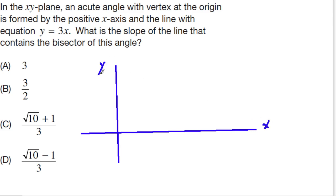And an acute angle with a vertex at the origin, so we're drawing a vertex at the origin, is formed by the positive X axis. There's one bound for us to think about right here.